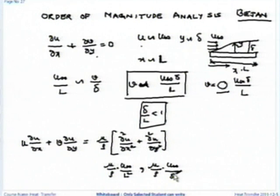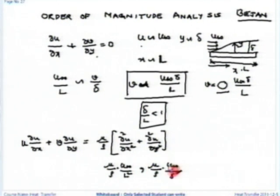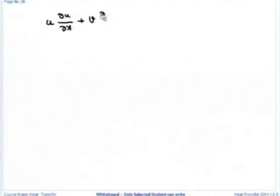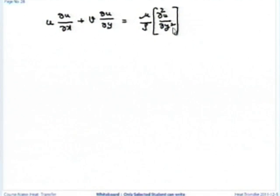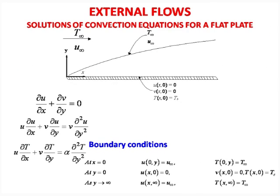The scale of the next term is mu by rho into u-infinity upon delta squared. Which of these two terms is important? Anything divided by delta squared — delta is very small, perhaps 0.1 m, while L is 1 or 2 m — so this will be at least 10 times larger. That is why I can neglect del squared u by del x squared. After neglecting that: u del u by del x plus v del u by del y equal to mu by rho del squared u by del y squared.